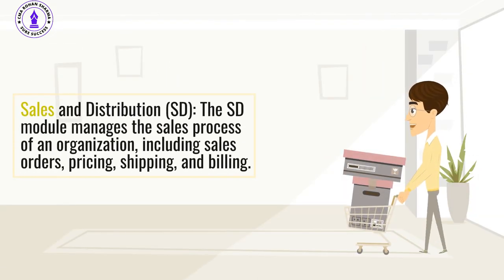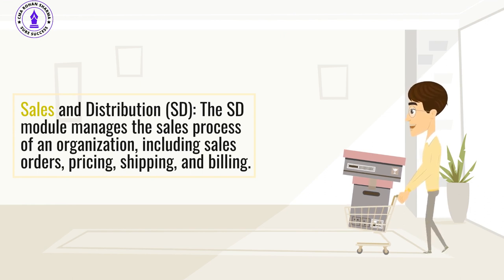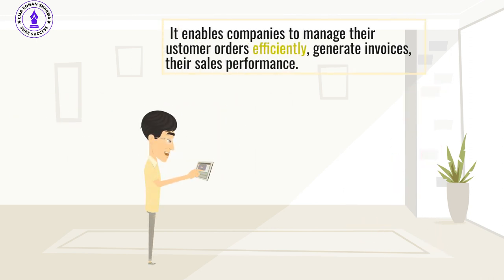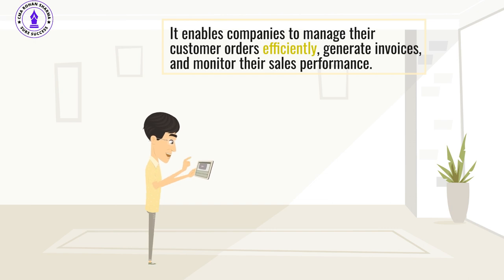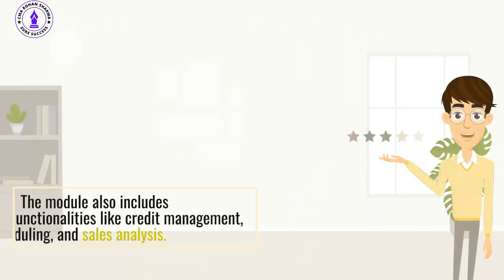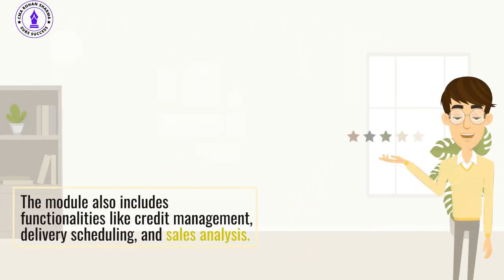Sales and Distribution: The SD module manages the sales process of an organization, including sales orders, pricing, shipping, and billing. It enables companies to manage their customer orders efficiently, generate invoices, and monitor their sales performance. The module also includes functionalities like credit management, delivery scheduling, and sales analysis.